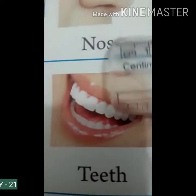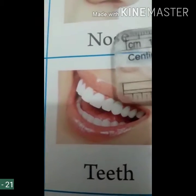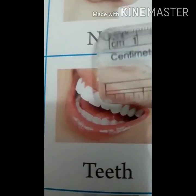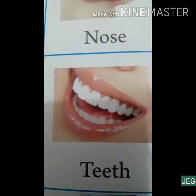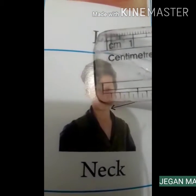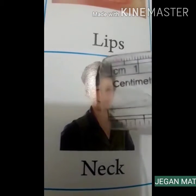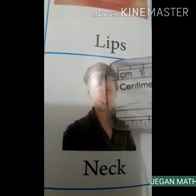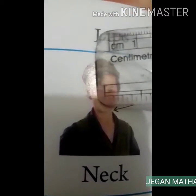These are teeth. Do you have teeth? Yes. What is the color of the teeth? The color of the teeth is white. This portion is called neck. The neck connects the head and the body. Neck.